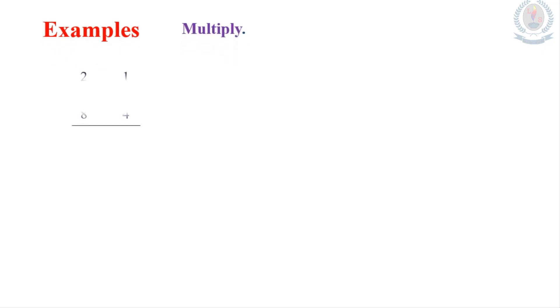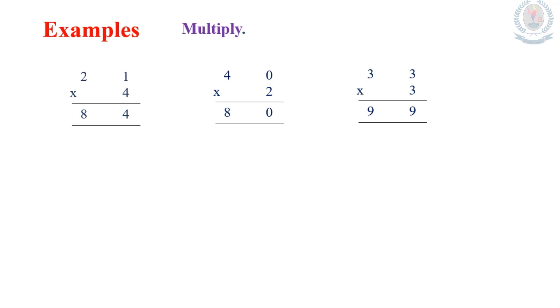Here are some examples. First: 21 multiplied by 4. Multiply the 1's: 4 times 1 is 4, 4 times 2 is 8. The product is 84. Second: 40 multiplied by 2. Multiply the 1's: 2 times 0 is 0, 2 times 4 is 8. The answer is 80. Third example: 33 multiplied by 3. 3 times 3 is 9. In the tens place you also have 3, so 3 times 3 is 9 again. The final answer is 99.